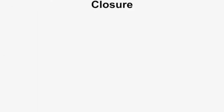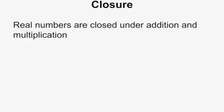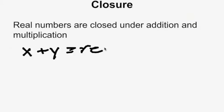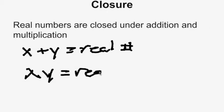There are 11 field axioms that apply to addition and multiplication. The first is called closure. Closure states that the domain of real numbers is closed under addition and multiplication. As long as x and y are real, x plus y equals a real number and x times y equals a real number. You cannot add or multiply two real numbers and get an imaginary number.